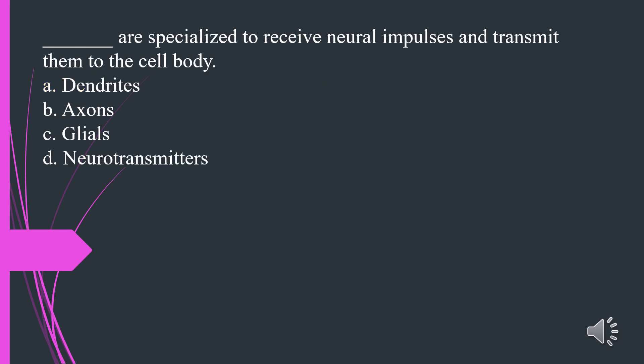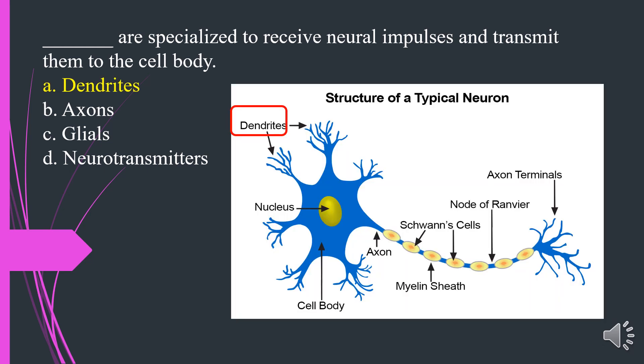What are specialized to receive neural impulses and transmit them to the cell body? A. Dendrites. B. Axons. C. Files. D. Neurotransmitters. The answer is A. Dendrites.